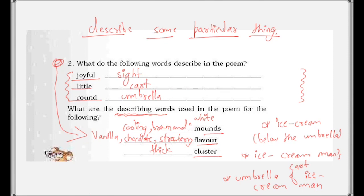So we now know what the describing words are for the following words used in the poem. The describing words are used to describe a particular word in the poem. First we found the words when the describing words were given, and in the second exercise we found the describing words when the words were given. These are opposite exercises helping us understand how describing words work.